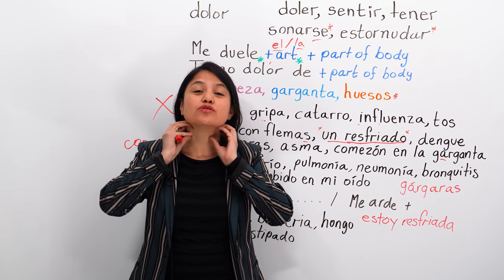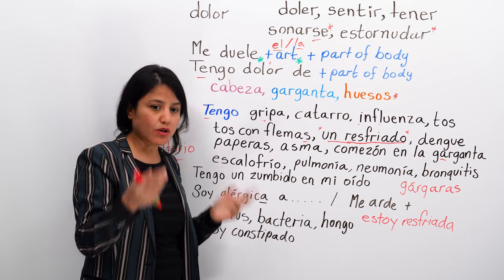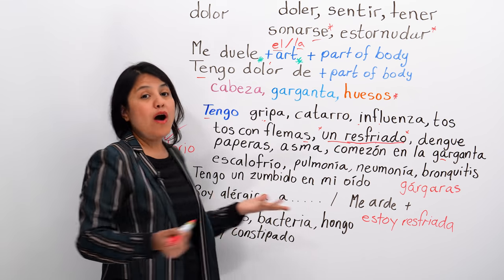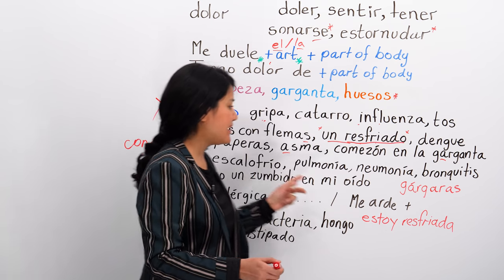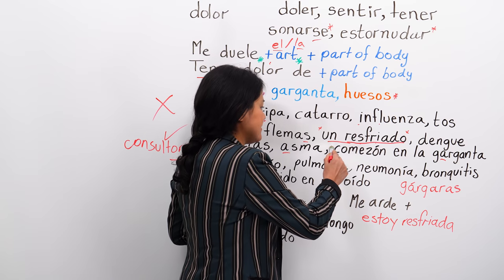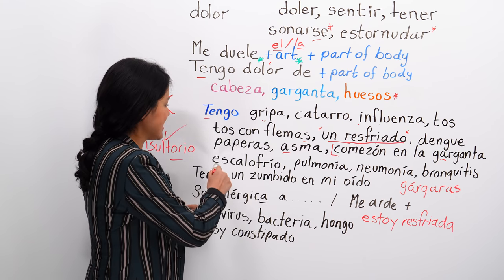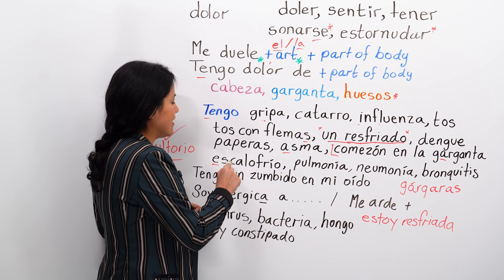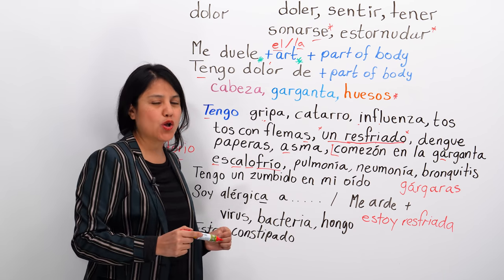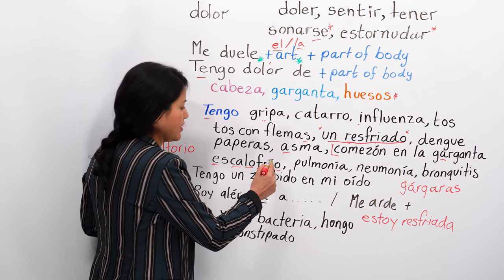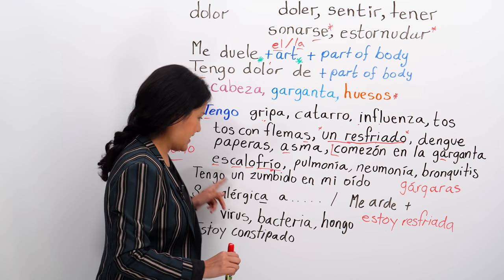Tengo asma — or soy asmática / soy asmático. Tengo escalofrío — I have the chills. Es-ca-lo-frío. Remember the accent mark means you stress that syllable: escalofrío. Tengo escalofrío — when you put five blankets on and you're still cold.